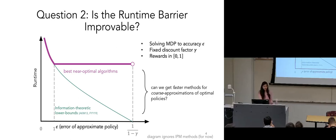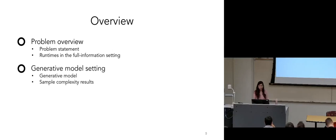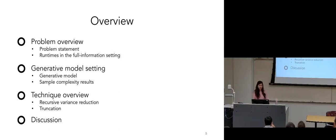Our work makes progress on both of these questions. Here's an overview of the talk: first, I'll cover the problem statement in the full information setting, where the transition matrix P is known explicitly, and discuss runtimes and our improvements. Then I'll cover the generative model setting, prior sample complexity results, and where our improvements sit. Then I'll give a brief overview of our techniques — recursive variance reduction and truncation — the two key ideas enabling our improvements. Finally, I'll conclude with a summary and some interesting open problems.